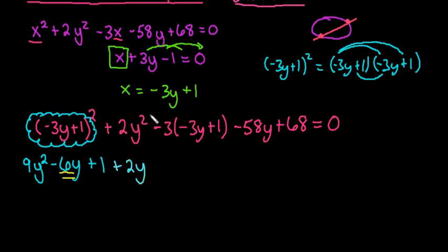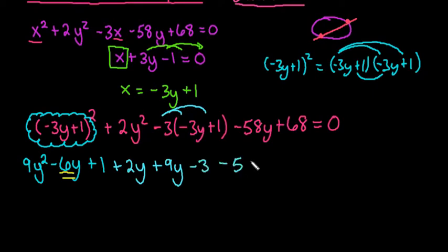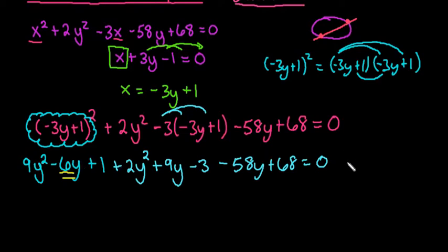Continuing to simplify: the 2y squared stays the same. Distributing the negative 3 into the parentheses gives positive 9y — since negative 3 times negative 3 is positive 9 — and negative 3 times 1 gives negative 3. Then we have minus 58y plus 68 equals 0. I always look over to make sure I didn't make any mistakes, and I notice I forgot a y squared term, which would have definitely influenced the answer — so always check your work, because simple mistakes happen to everybody.